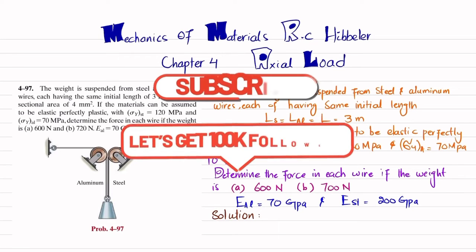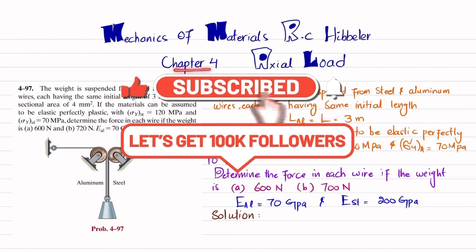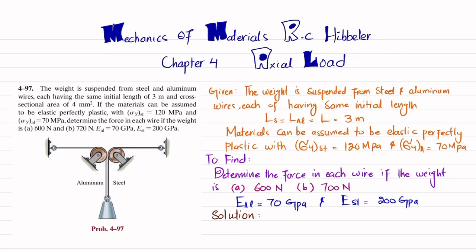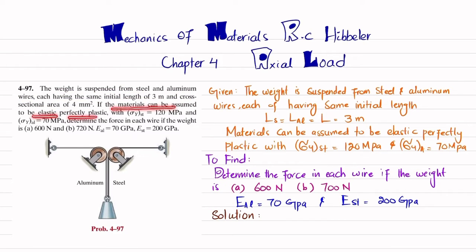Welcome back. In this video we are going to solve problem 4-97, taken from chapter 4 (Axial Load) in Mechanics of Materials by R.C. Hibbeler. The problem states: a weight is suspended from steel and aluminum wires, each having the same initial length of 3 meters and cross-sectional area of 4 square millimeters. The material is elastic-perfectly plastic with yield strength of 120 MPa for steel and 70 MPa for aluminum. We need to determine the force in each wire for part A (W = 600 N) and part B (W = 720 N). The modulus of elasticity is 70 GPa for aluminum and 200 GPa for steel.